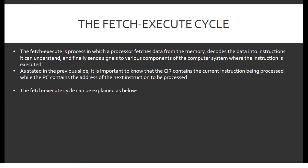Moving on to the fetch-execute cycle. The fetch-execute cycle is a process in which a processor fetches data from memory, decodes the data into instructions it can understand, and finally sends signals to various components of the computer system where the instruction is executed. It is important to note that the CIR contains the current instruction being processed, while the PC contains the address of the next instruction to be processed.